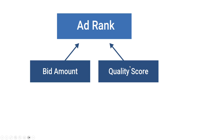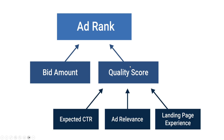The quality score is based on three things. First, expected click-through rate. Google wants the click-through rate to be as high as possible because that's how it earns money. If we earn a high click-through rate, we'll be rewarded with better ad placement. We can improve this by writing good ad copy and doing continuous A/B tests to keep improving that click-through rate.